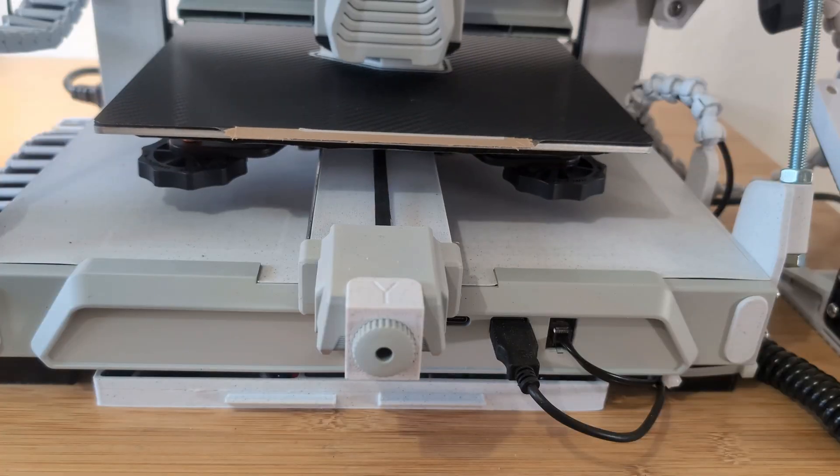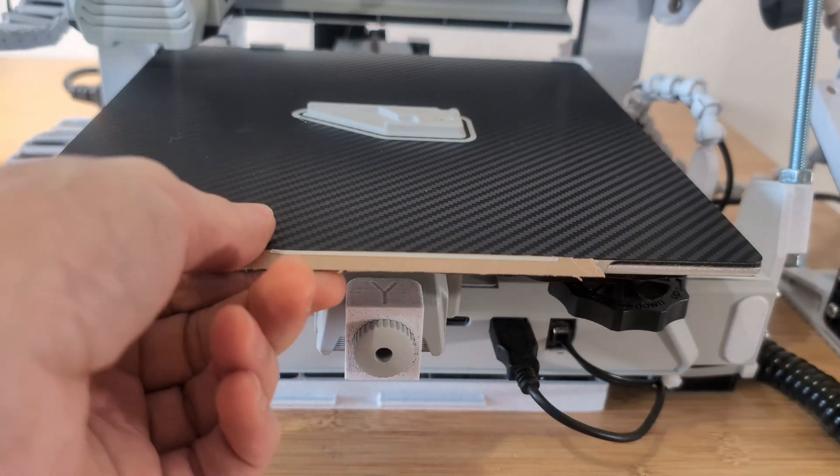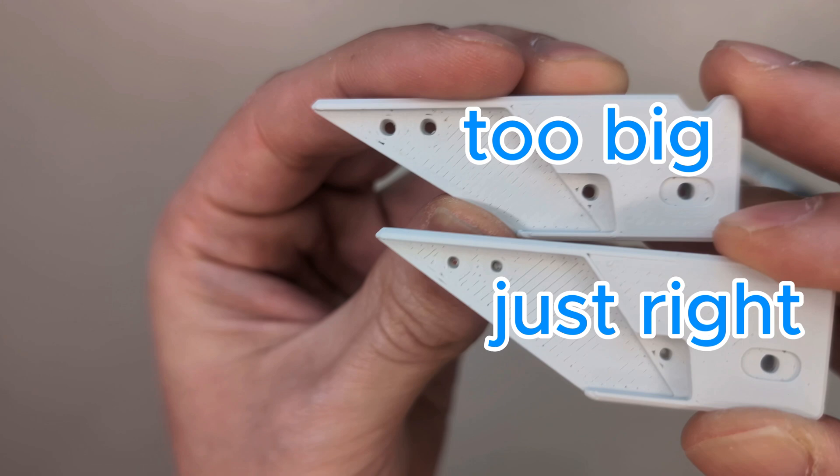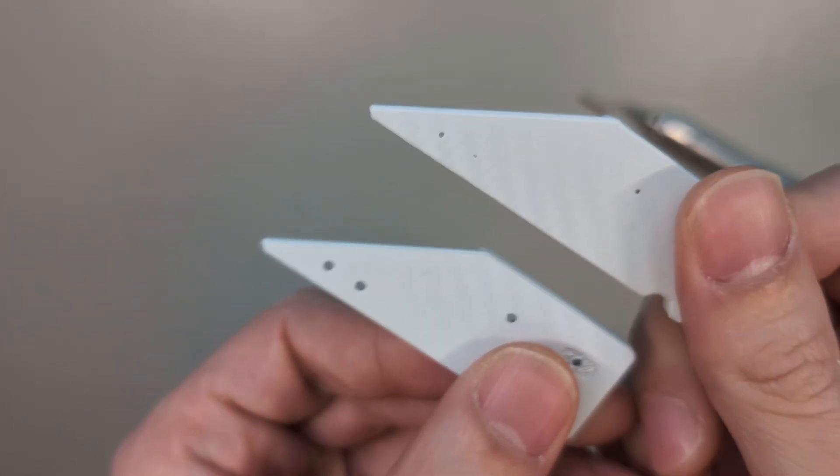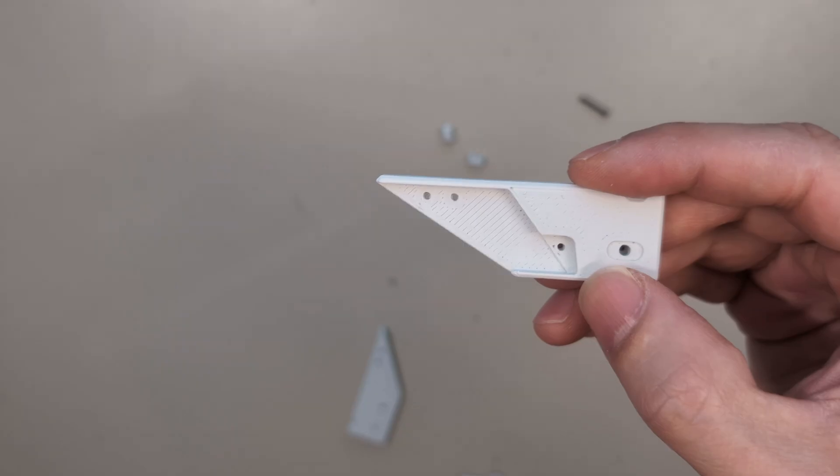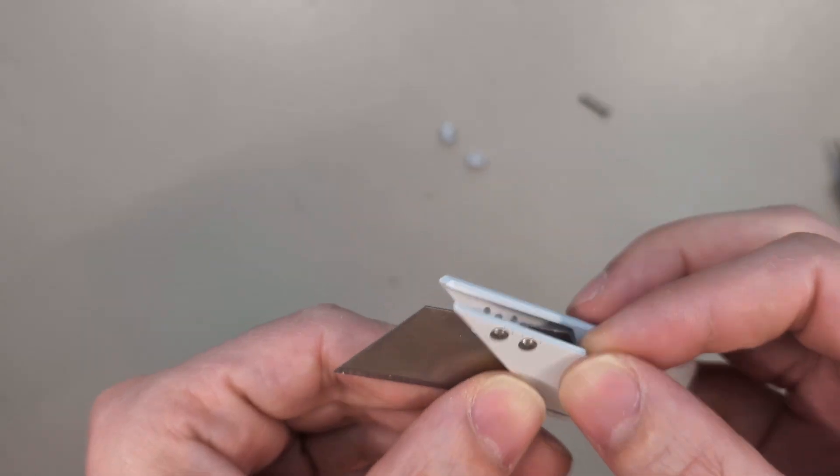And we let the printer do its thing. And here you can see the difference between the old and the new part, which is just the size of the holes. The blade again goes there, and this time the screws sit tight.